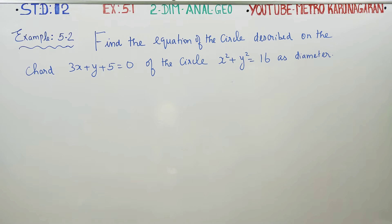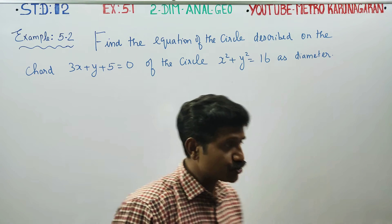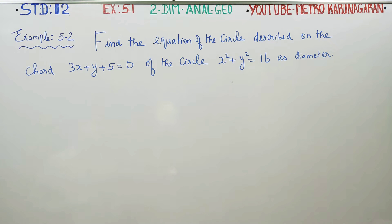Dear 12th standard students, in Exercise 5.1, related Example 5.2 in two-dimensional analytical geometry: find the equation of the circle described on the chord of the circle as diameter.